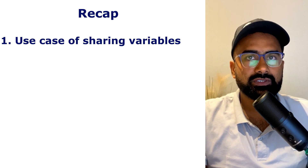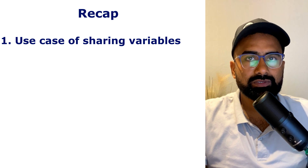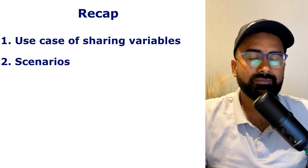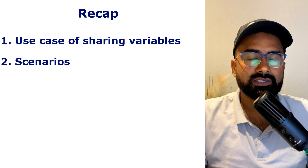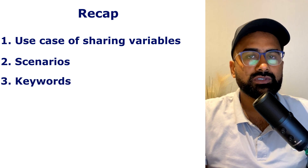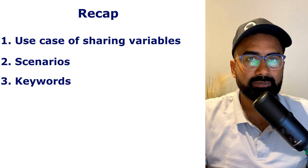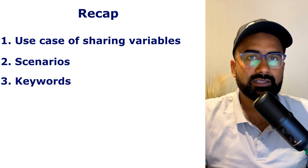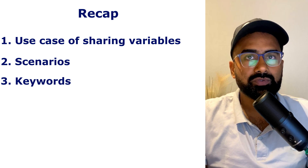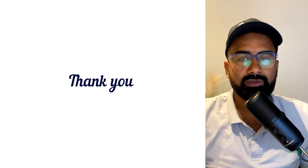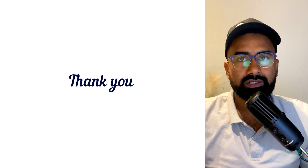Let's recap what we learned today. First, we discussed the use case of sharing variables across multiple stages, jobs and steps. Then we saw different scenarios: using the variable in different steps, different jobs, and different stages. We also saw the dependency keyword and the stage dependency keyword. In the demo, we saw how to set the variable in one stage and use it across multiple jobs and stages. That's all for today's tutorial — I hope this was useful. If you have any query or concern, write in the comment box. Thank you and have a good day. Bye-bye.